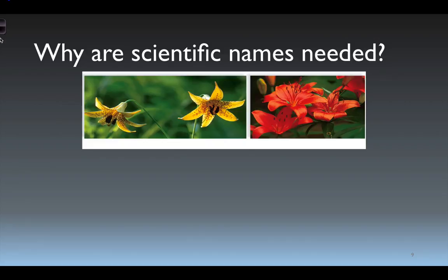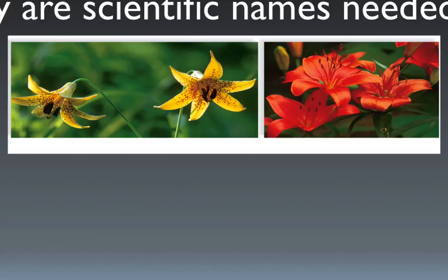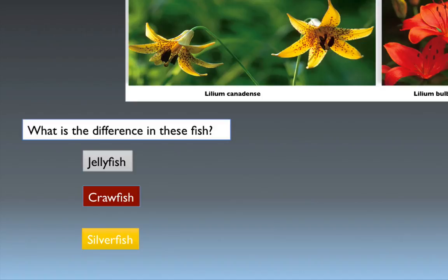So why are scientific names needed at all? Look no further than these two flowers — both types of lilies. The one on the left is yellow with spots on its petals; the one on the right is red and looks very different. That also means the chemicals inside them are different. The one on the left is Lilium canadense, the one on the right is Lilium bulbiferum — two different species of lilies.